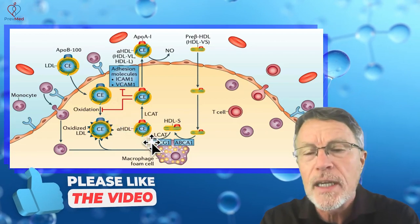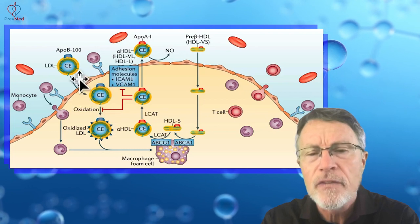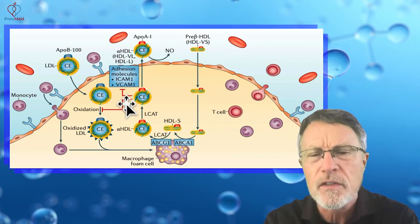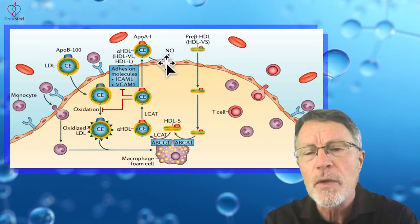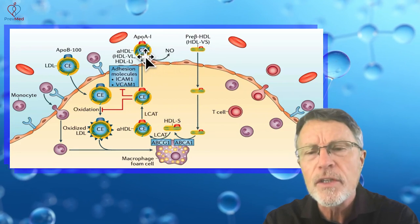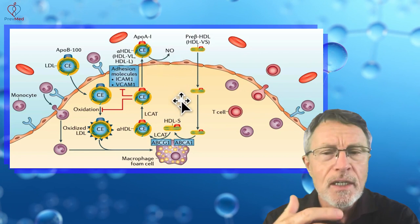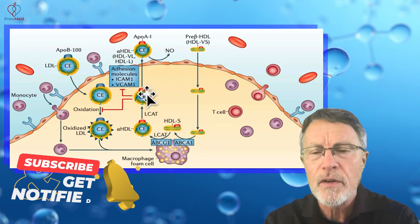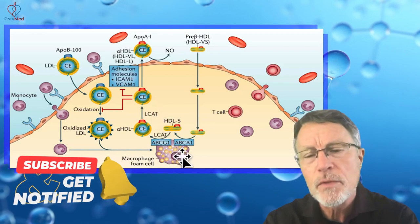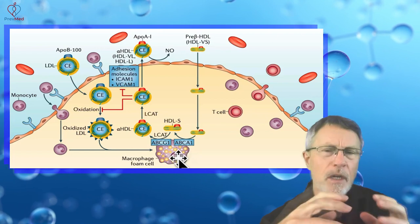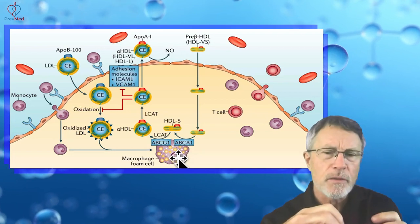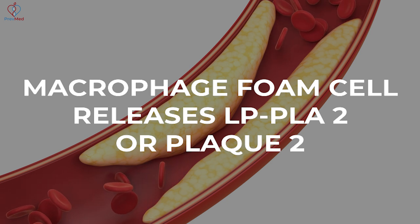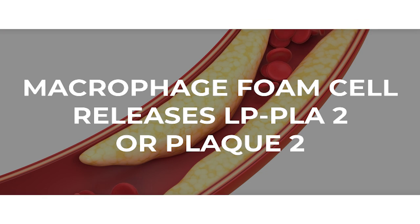Looking at what HDL does: HDL stops processes of oxidation of cholesterol esters when they're in plaque. It decreases adhesion molecules ICAM1 and VCAM1. Another key function is encouraging the formation of nitric oxide, which is like food for the endothelium — the intima layer of the artery wall. HDL also goes to macrophage foam cells and decreases inflammation. There are a couple of types of immune cells that cause inflammation: the macrophage or foam cell, and the neutrophil. The macrophage or foam cell releases LPPLA2, one of the enzymes we look for in the inflammation panel.